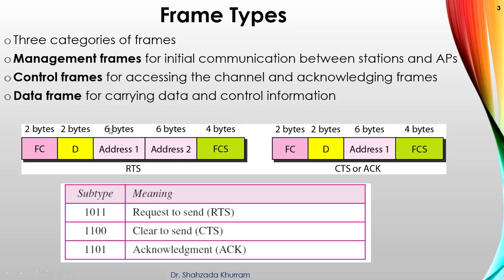From here you can see there is basically management frames. Management frame, how is working, you can see is a subtype. If the subtype is one zero one one, it means is a request to send frame. If subtype is one one zero zero, it means is clear to send. If subtype is one one zero one, it means acknowledgement. And where is this subtype? I already mentioned.